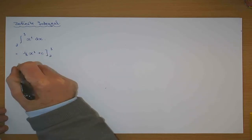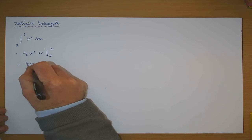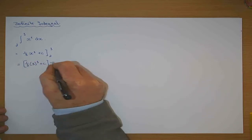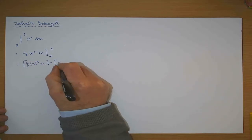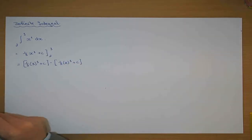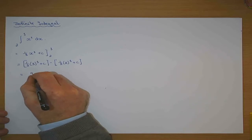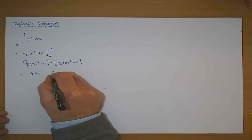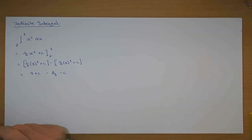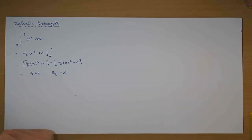The top number is put in first: one third of three cubed plus c, and then you minus it from the bottom number — one third of two cubed plus c. That equals a third of three cubed, which is nine, plus c, minus eight over three, minus c. The minus outside the bracket changes the signs, so the constant c cancels.